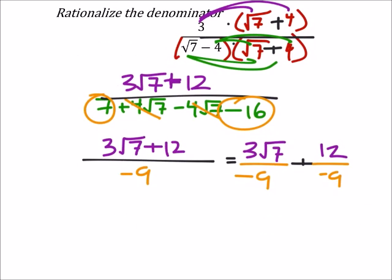So I've got 3 square root of 7 over negative 9, plus 12 over negative 9. And what does this do for us? Well, it'll give us 3 divided by 9 is 1 third, so I've got the square root of 7 over negative 3.